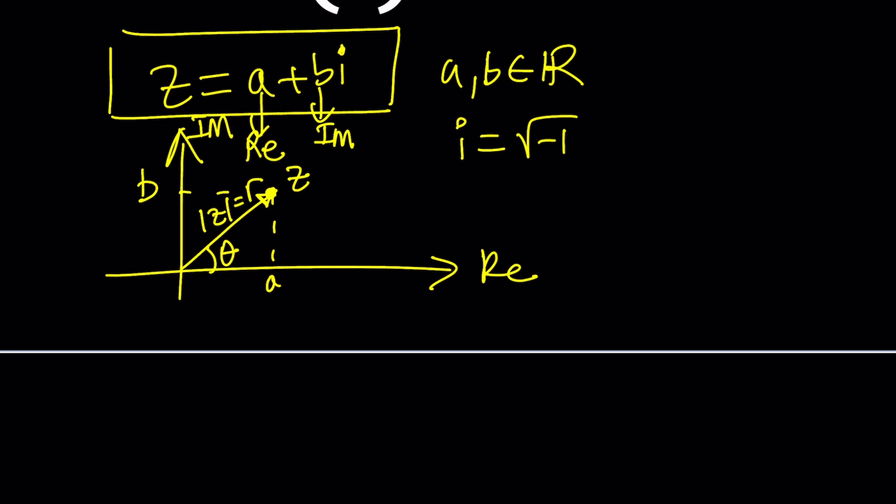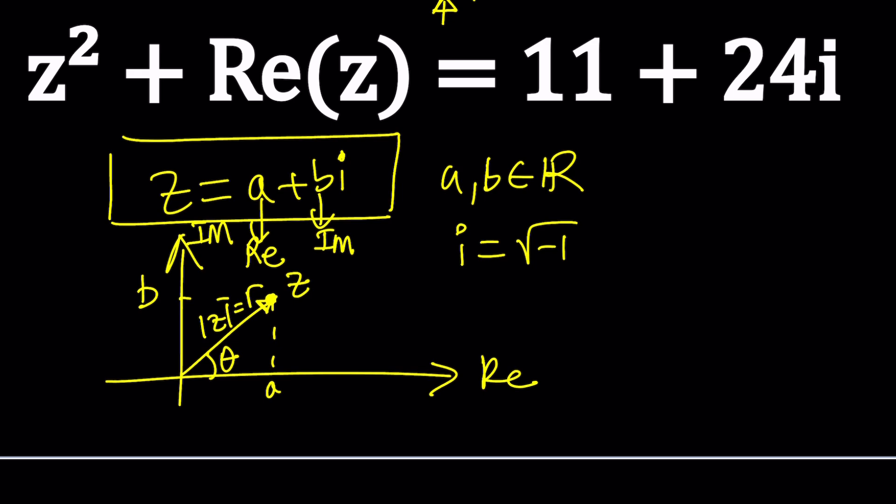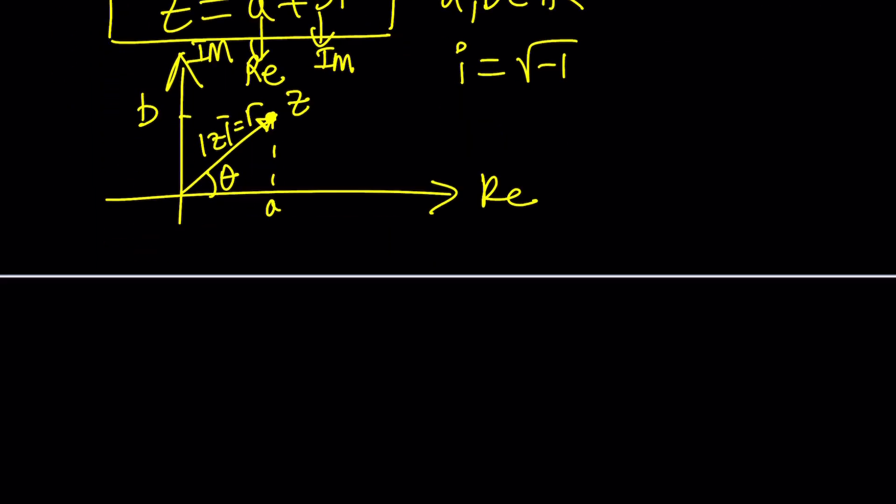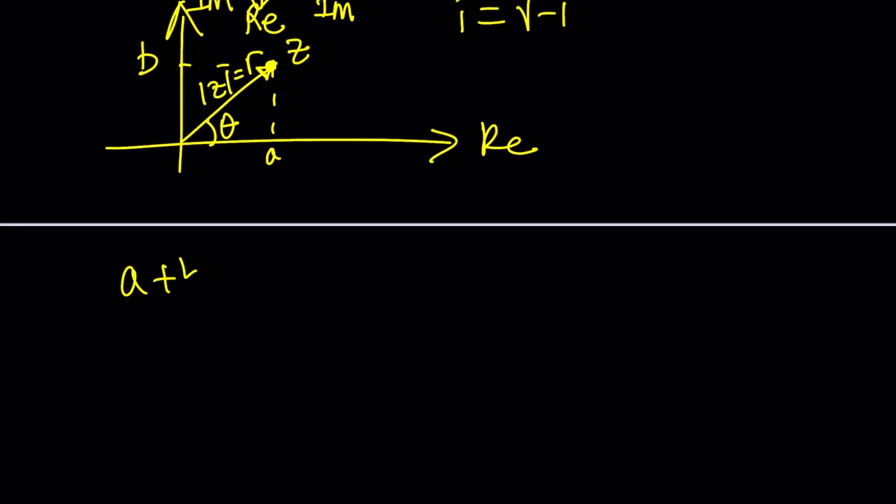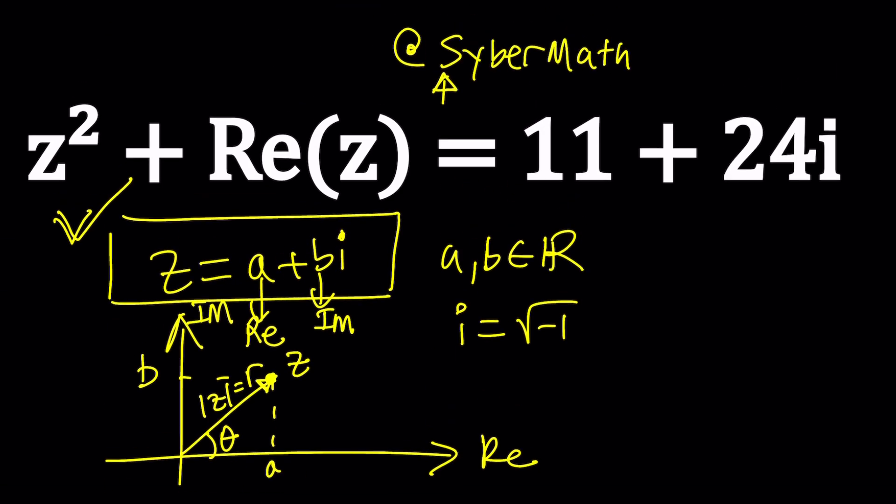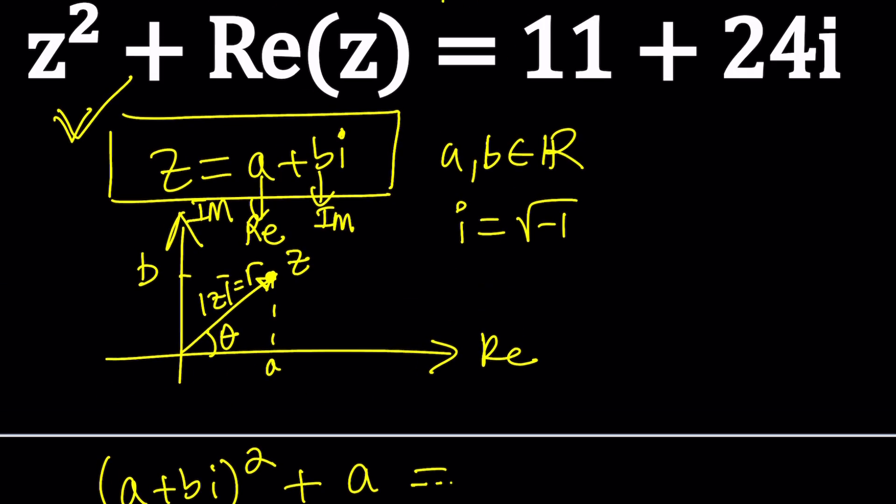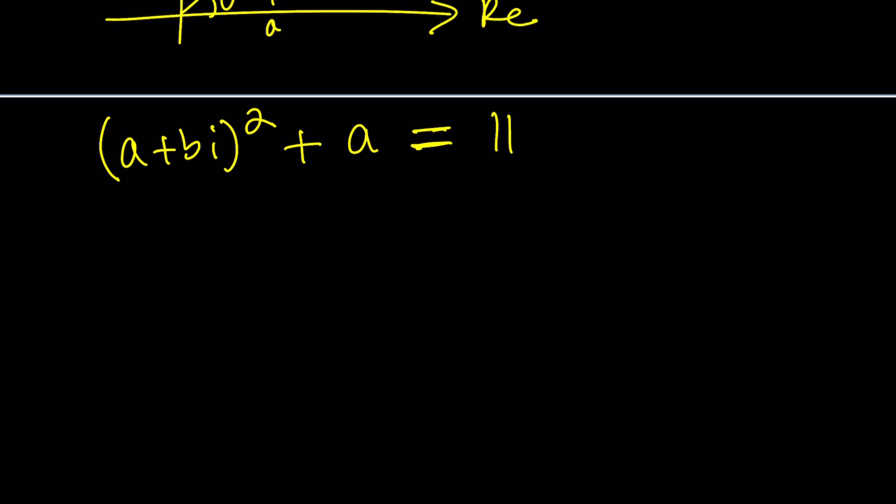So if the imaginary part is zero, if b is zero, then we have a real number, which is also a complex number. Complex numbers contain real numbers. And if a is zero and b is not zero, then we have a purely imaginary number. i is imaginary, 2i is imaginary. Makes sense. Now since we are given in this equation that z squared is added to the real part of z, and since we assume z is a plus bi, we can go ahead and do the following: replace z with a plus bi, plus real part of z which is a. Wow, that was easy. Equals 11 plus 24i. Awesome.